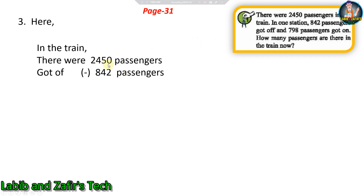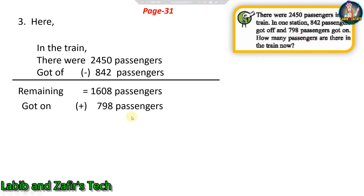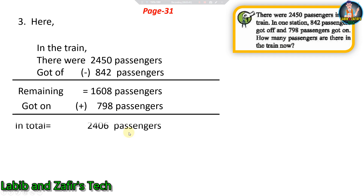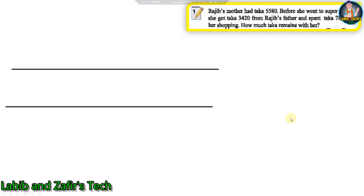In the train there are two thousand four hundred fifty passengers. Eight hundred forty-two passengers got off — 'got off' means they left the train — so we subtract to get one thousand six hundred eight remaining passengers. Then we add seven hundred ninety-eight passengers who got on. In total we get two thousand four hundred six passengers in the train now.